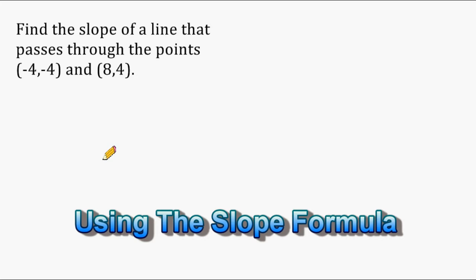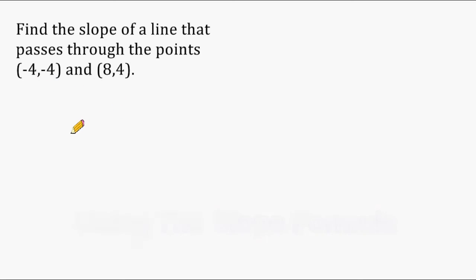This is Mr. Masonette, and today we are going to practice finding the slope of a line that passes through the points negative 4, negative 4, and positive 8, positive 4. And to do this, we are going to use the slope formula.